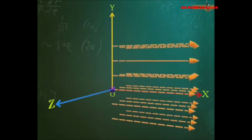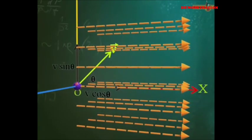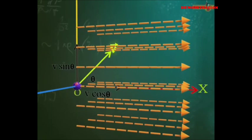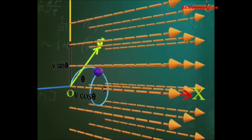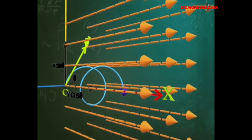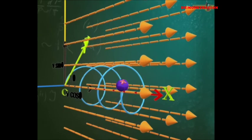The charged particle moves at an angle theta to the magnetic field. The velocity V can be resolved into two components: V sin theta perpendicular to the field and V cos theta parallel to the magnetic field. Due to the perpendicular component of the velocity, a force F acts perpendicular to B and to V sin theta. This force causes the charged particle to move along a circular path.